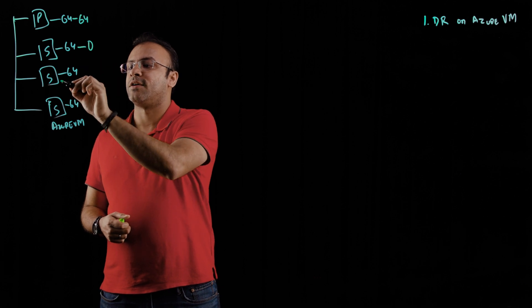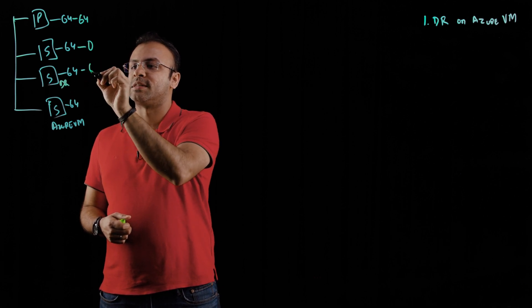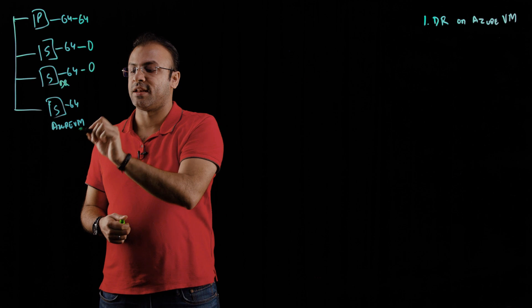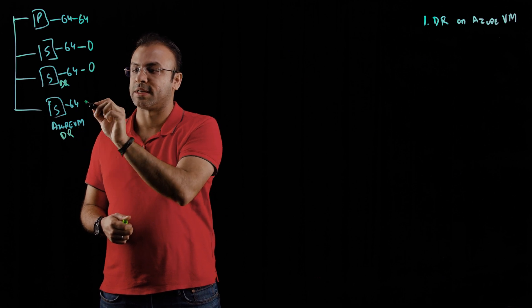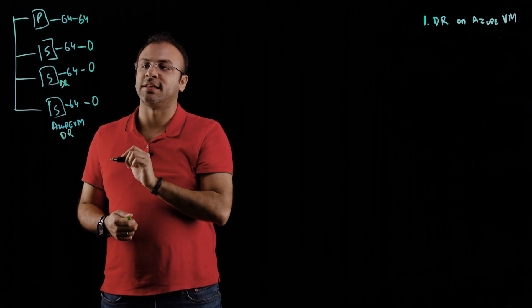the number of cores that you need to license for would be 64 for your primary, none for your secondary. If this is a DR replica on-premises, again, none for that. And if this is serving as a DR replica, you would, again, not need to license it.